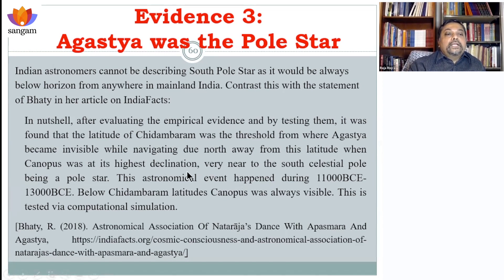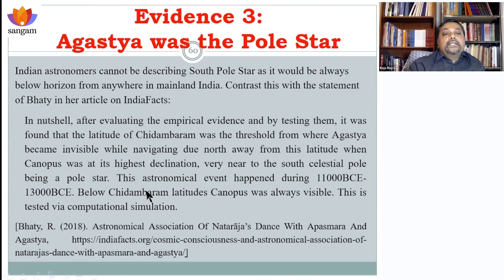Her claim states that Canopus was at its highest declination, very near to the South Celestial Pole, being a pole star during 11,000 BCE to 13,000 BCE, tested via computational simulation. She also claims that below the latitude of Chidambaram, Canopus was always visible. But if you are claiming it is a pole star, it should always be visible at the same place in the sky — not rotating. And she seems to think that at Chidambaram it is at the horizon. Let's check this.